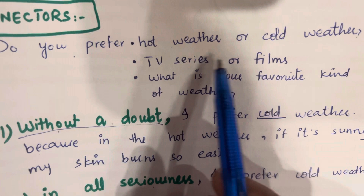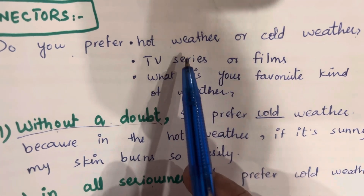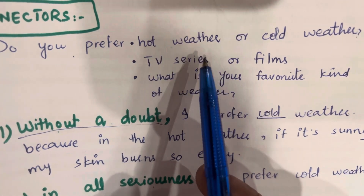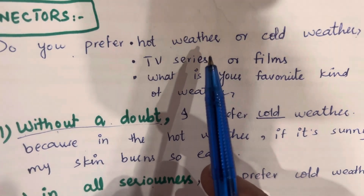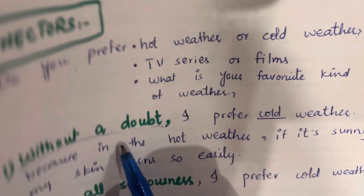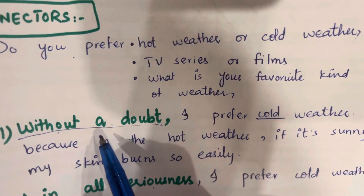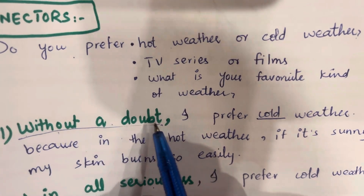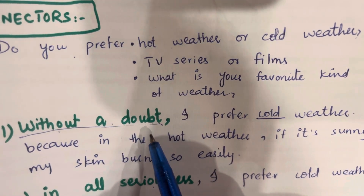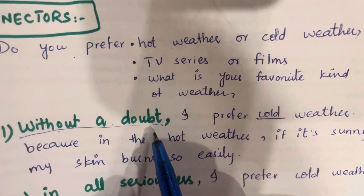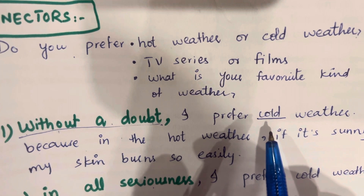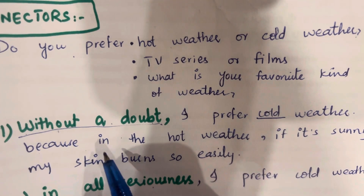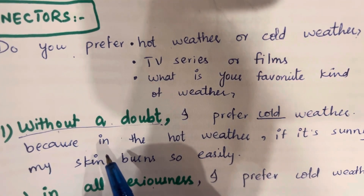When comparing two things, the examiner asks what you prefer — for example, hot weather or cold weather. You have to state one preference clearly and then give a reason. You can say 'without a doubt I prefer cold weather' and then explain why.